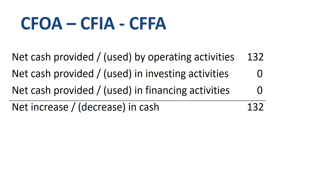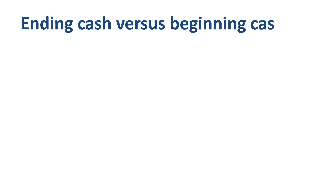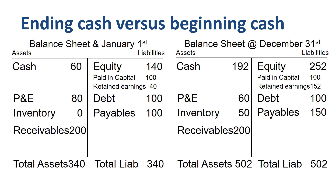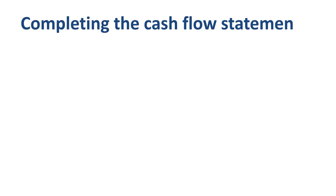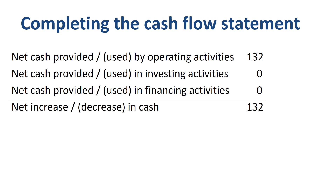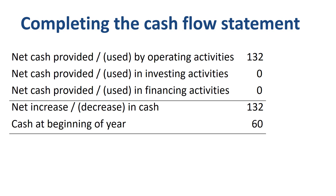Please note that you have not yet completed the full cash flow statement. An important step is to check on the balance sheet what the amounts were of the opening cash balance and the closing cash balance. Opening cash was 60, closing cash was 192. The net increase or decrease in cash that you calculated should be the difference between these two balances. The net increase in cash of 132 plus the opening cash of 60 equals the closing cash balance of 192. Done!